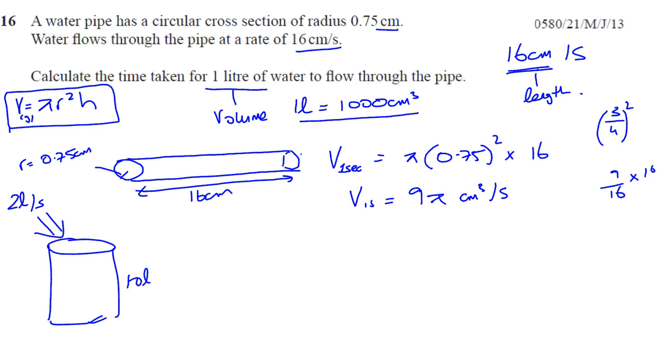So here you want to find out how long it will take one liter of water to flow through the pipe. We take the volume of water that flows through the pipe, divide it by the volume that flows every second which is 9π. That should tell us how many seconds it takes for that volume of water to flow through the pipe.